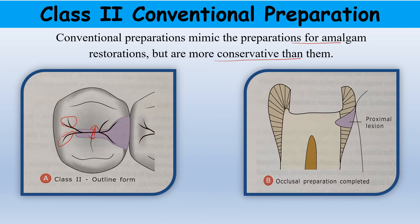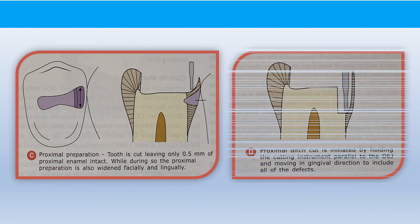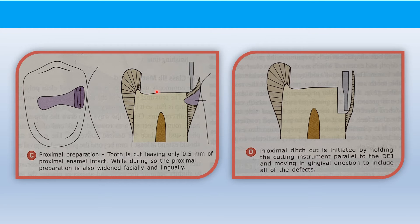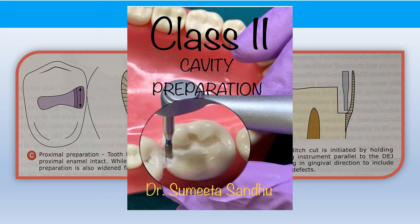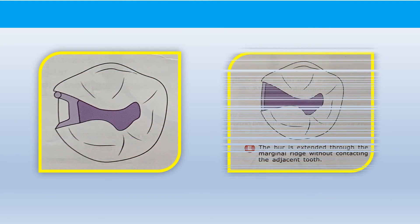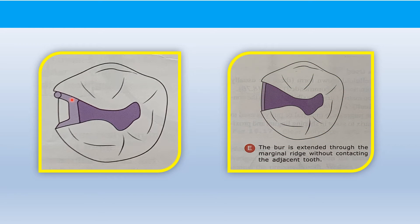In the second picture, the occlusal preparation has been completed. The next step is making the proximal box preparation. We extend the occlusal surface to the proximal side and then go deeper in the gingival direction cutting a proximal ditch. We then move towards the facial and lingual limits of the proximal margin, fracturing it. In this way the proximal preparation gets completed.